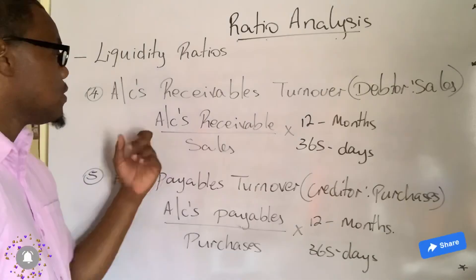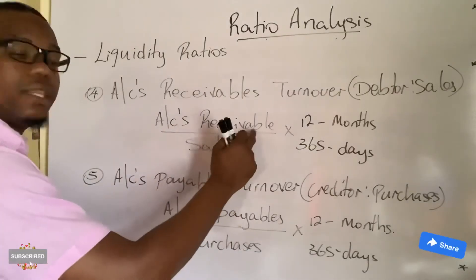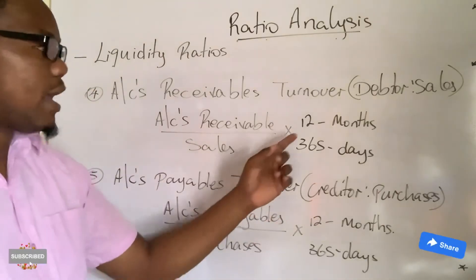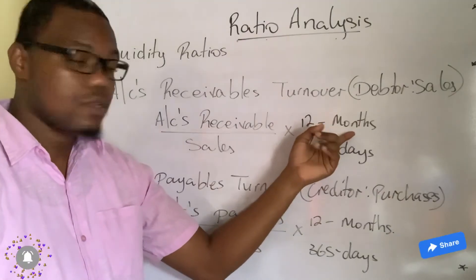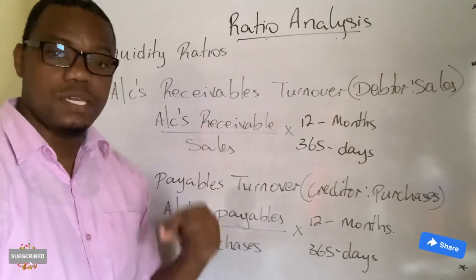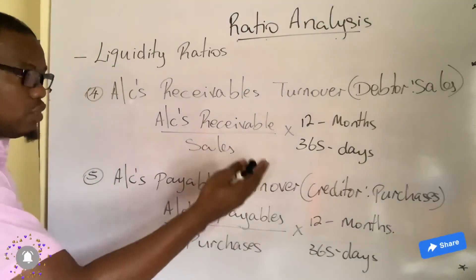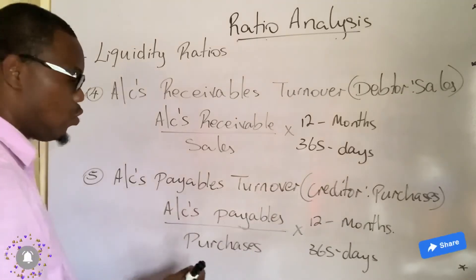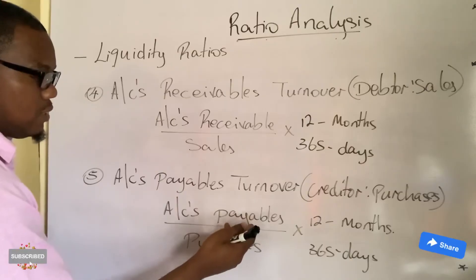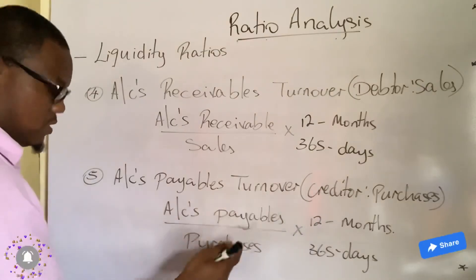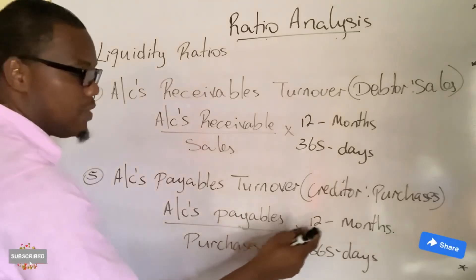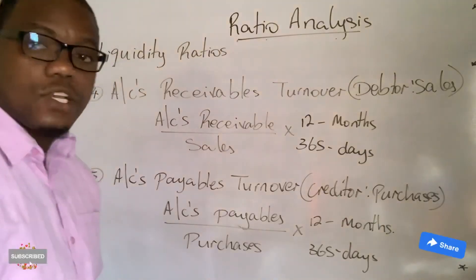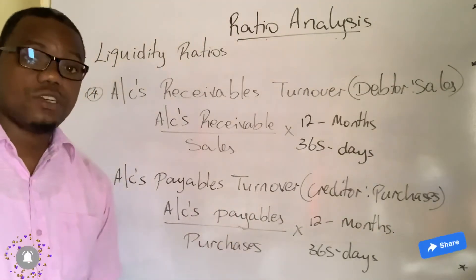The formula for accounts receivable turnover is: accounts receivable (debtors) divided by sales, multiplied by 12 for months or 365 for days. This tells you how quickly your debtors repay you. The accounts payable turnover formula is: accounts payable (creditors) divided by purchases, multiplied by 12 for months or 365 for days. This tells you how quickly you repay your creditors.